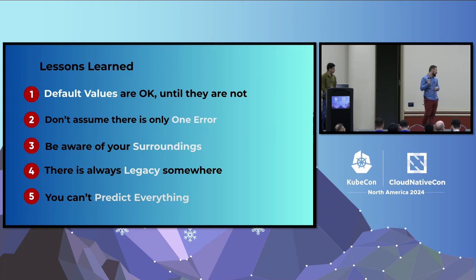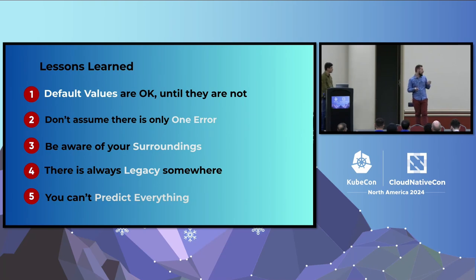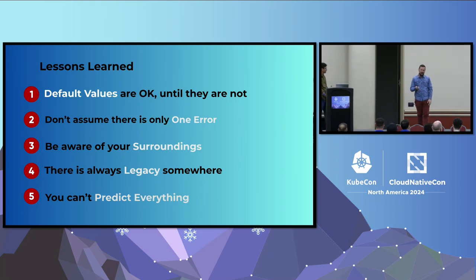The last takeaway: you cannot predict everything. I remember KubeCon Valencia — someone explained they did lots of tests and still something went wrong in production. You can do every physically possible test, but you can't predict everything that's going to happen. Production always has something you don't know about or isn't mapped. There are two ways to stay ahead: either you're here, hearing someone else's sad story, and when it happens to you, you go 'oh yeah, I heard about this before' — or you can have your job made very difficult, like two bad Mondays. Choose wisely.